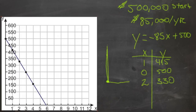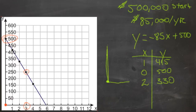Looking at the points we actually plotted: at the beginning of the first year they haven't paid off anything, so the number of years is zero and their debt is five hundred thousand. After three years of paying off at eighty-five thousand a year, their debt is only two hundred and fifty thousand. It looks like they would actually pay off the debt somewhere just before their sixth year, at which point their debt goes to zero and they continue on in business without owing any more.